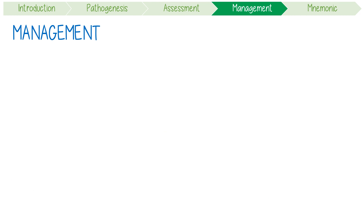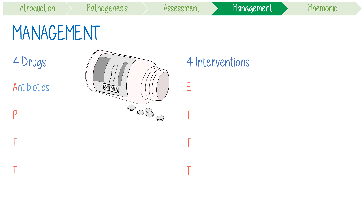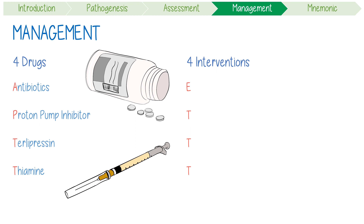Let's discuss management options. There are four drugs to remember — APTT: prophylactic antibiotics, which reduce the risk of recurrent bleeding and mortality; proton pump inhibitors, especially if a bleeding peptic ulcer is a potential differential; terlipressin or octreotide, which reduces portal pressure and splanchnic blood flow; and finally thiamine, because there's a high likelihood the patient is at risk of Wernicke-Korsakoff syndrome, specifically if the cause is alcoholic liver disease.